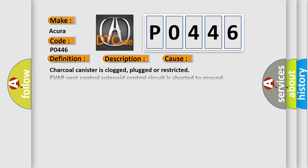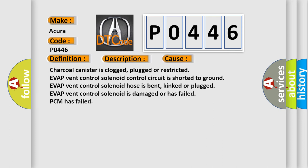This diagnostic error occurs most often in these cases: Charcoal canister is clogged, plugged or restricted. EVAP vent control solenoid control circuit is shorted to ground. EVAP vent control solenoid hose is bent, kinked or plugged. EVAP vent control solenoid is damaged or has failed. PCM has failed.